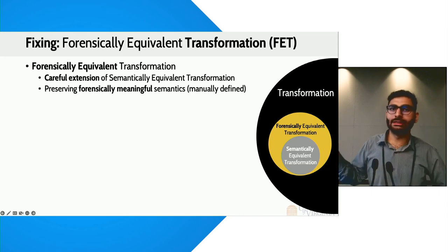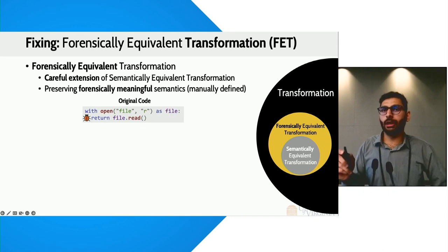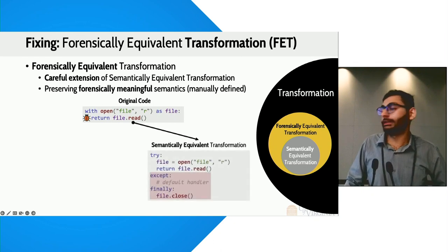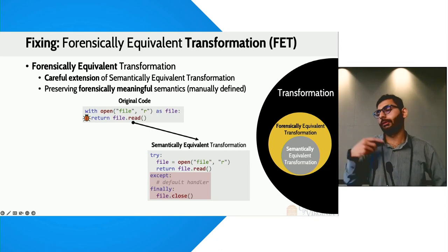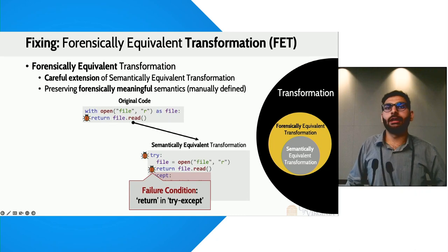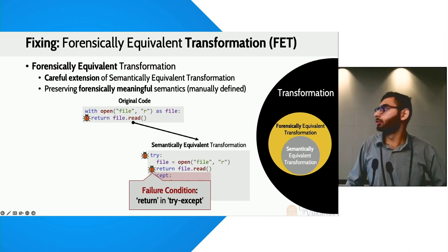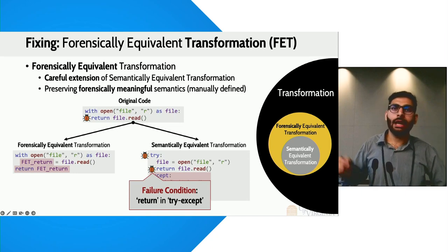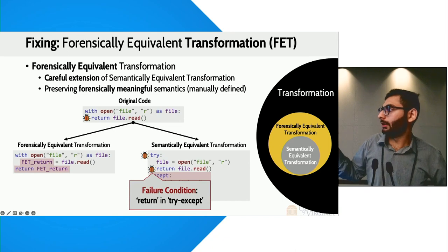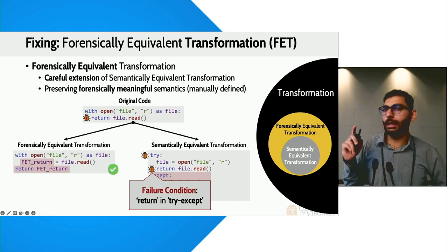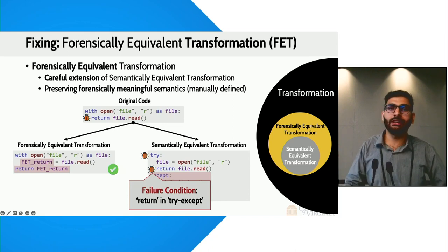Let me show you what that looks like through an example. The error is at the return statement inside the with block. A semantically equivalent transformation would replace the with block with its implementation using try, except, and finally. However, after doing that, we still have the error on the return statement, because the error is essentially the return being inside the try or with block. So instead, we do a forensically equivalent transformation where we move the return statement outside the with block and replace it with a FET_return variable. This resolves the error and, by using that variable, preserves the forensically meaningful information.